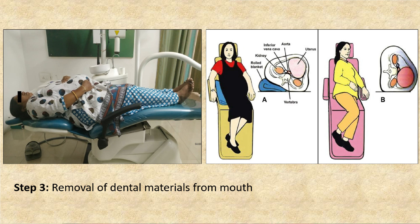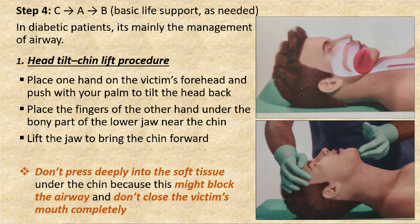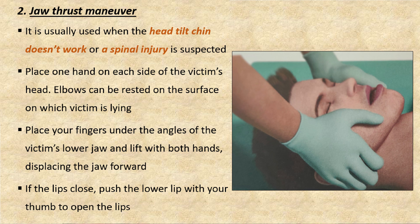Step three is removal of dental materials from the mouth. Step four is basic life support — circulation, airway, and breathing. Because the tongue can fall backwards and block the airway, the airway must be cleared. The first technique is the head tilt chin lift: place one hand on the chin and lift it so the chin points into the air in line with the ear lobes, lifting the mandible and tongue away from the pharyngeal wall. Do not press deeply into the soft tissue under the chin, and do not close the victim's mouth completely.